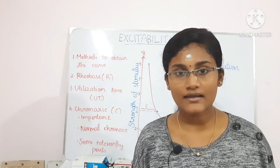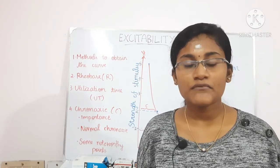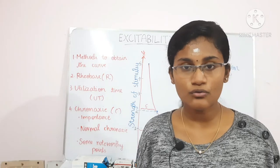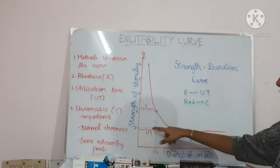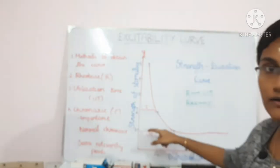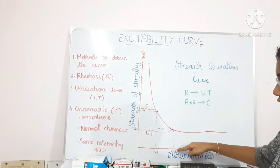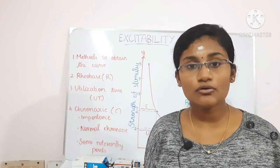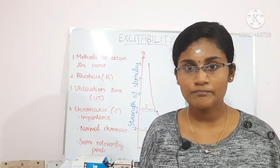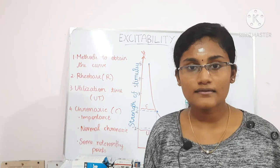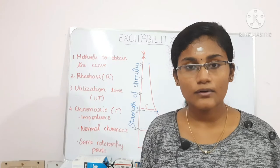Utilization time is the minimum time required by the tissue to react to the rheobase strength. You can see the rheobase strength is 1 volt, and the minimum time required to react to that is the utilization time, which is 0.2 milliseconds. So the tissue gets excited in 0.2 milliseconds at the rheobase or threshold strength.